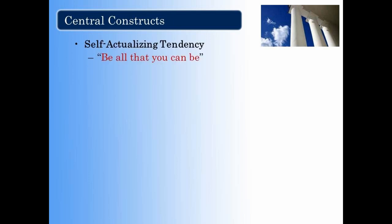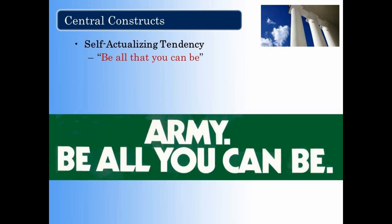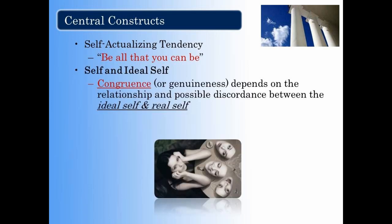The self-actualizing tendency can easily be recalled from a famous slogan from the army, 'Be all that you can be,' and it alludes to the potential of all persons. The next construct is congruence or genuineness, and focuses on the relationship between the ideal self and real self. How much of who we really are do we actually show to the world around us, and is there congruence between both the ideal and real self?